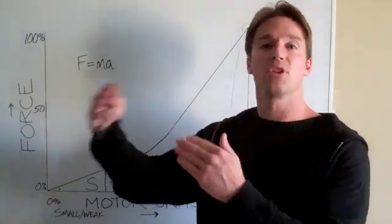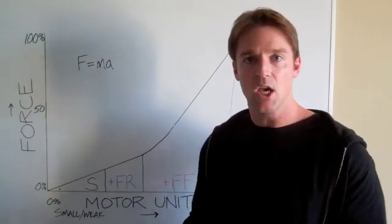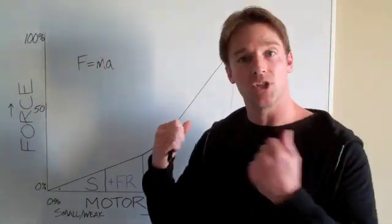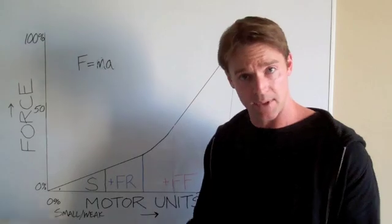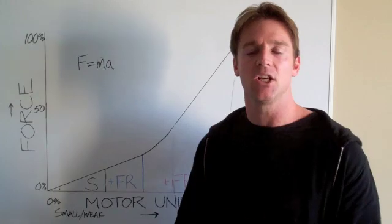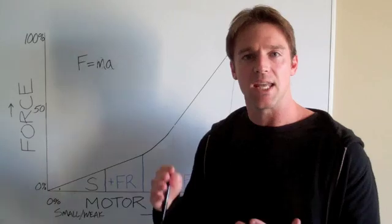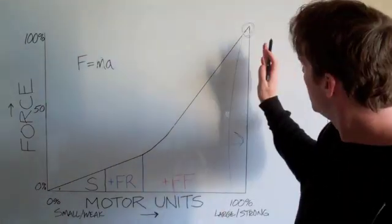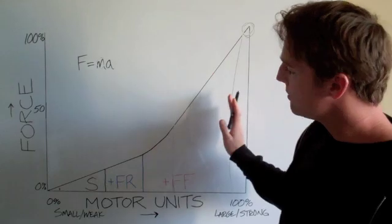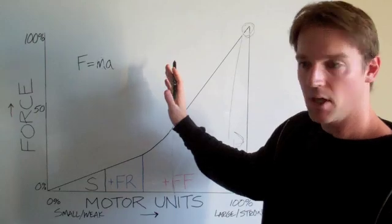But they're the first to drop out as soon as force is decreased. So, you can think of force being decreased either because you're purposely slowing down the lift, or because you're fatiguing and your muscles can no longer produce the same amount of force. In either case, your motor unit recruitment and your force production is shifting back to the left.